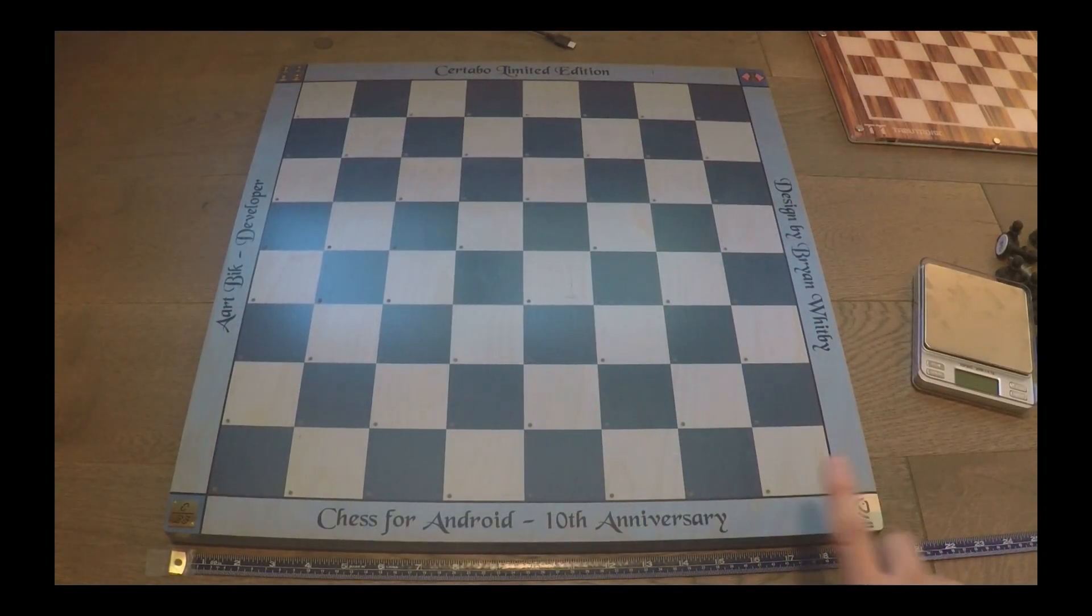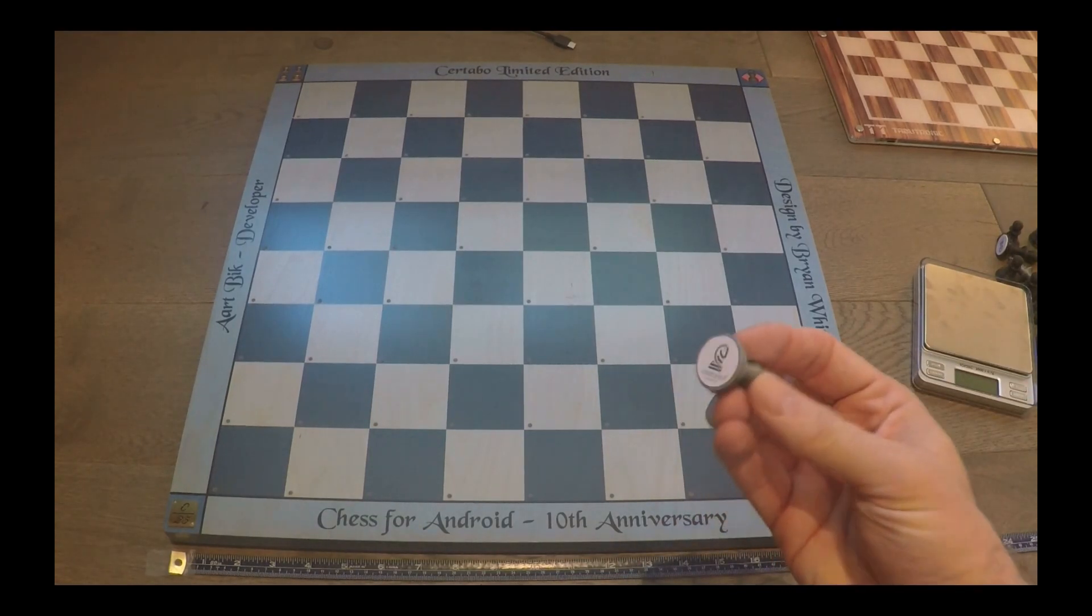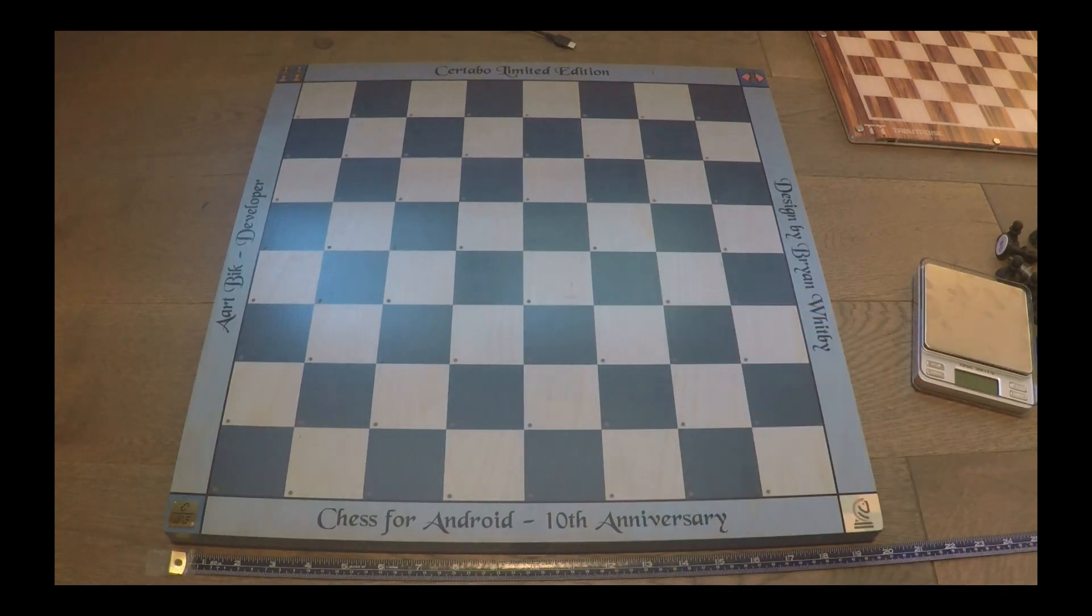This is another Certabo board. About nine and a half inches. Made of wood. And Piero, the owner of Certabo, kindly made a chess for Android 10 years anniversary edition for me. When the chess for Android app reached that age. Really nice board. And it works the same way. So you use the Certabo chip slate with any piece set that you like over this board.